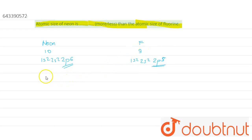Another thing we can see is that in neon we have van der Waals forces, and in fluorine we have covalent forces or covalent bonds.